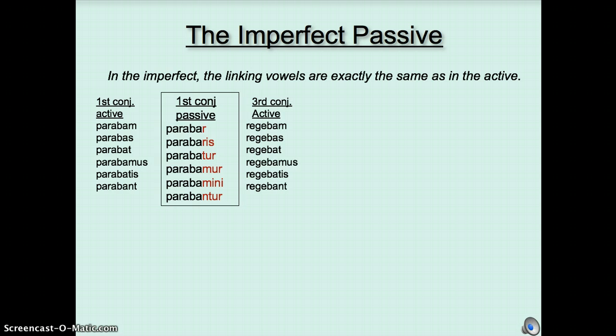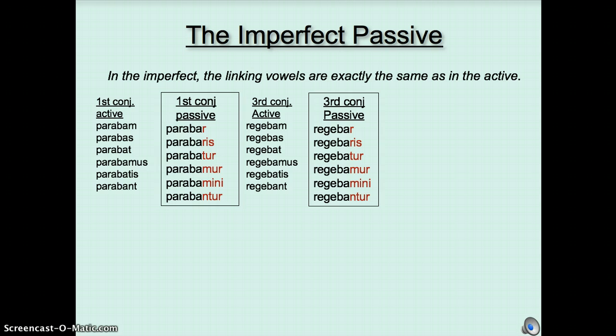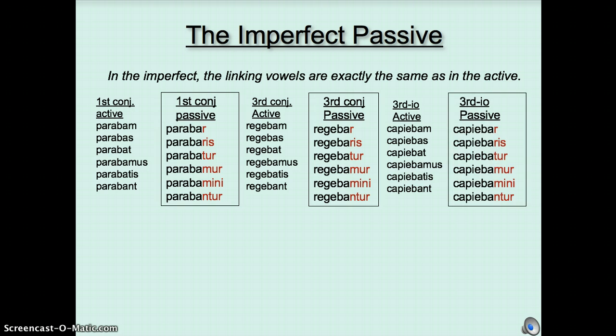This is going to be true in the other conjugations as well. So regebam, regebas, regebat, regebamus, regebatis, regebant turns into regebar, regebaris, regebatur, regebamur, regebamini, regebantur. And in the third IO, capiebam, capiebas, capiebat, capiebamus, capiebatis, capiebant turns into capiebar, capiebaris, capiebatur, capiebamur, capiebamini, capiebantur.